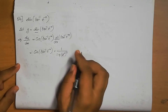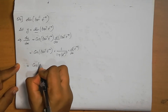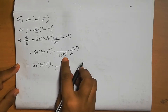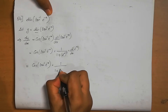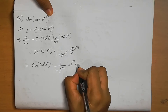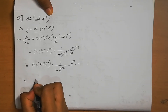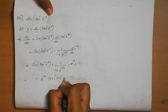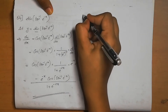What is remaining is e^(-x). So we need to find d/dx of e^(-x). This equals e^(-x) into derivative of (-x), which is -1. So combining everything: minus e^(-x) cos(tan⁻¹(e^(-x))) by (1 plus e^(-2x)). This is the answer.